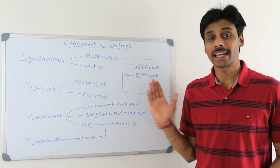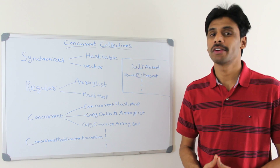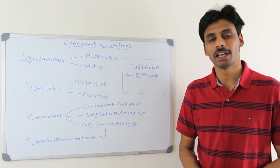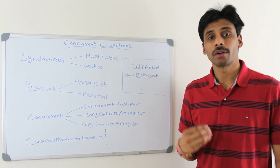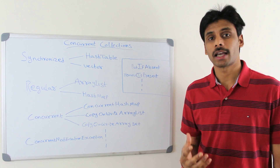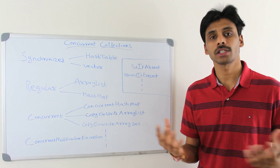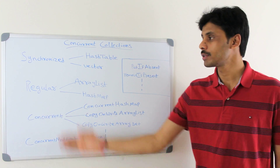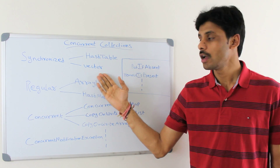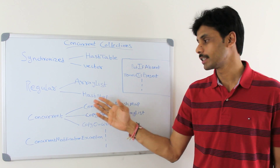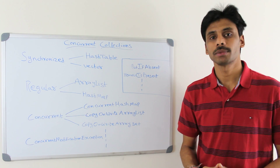This lecture introduces you to concurrent collections that started in Java 5, which allow us to develop scalable multi-threaded Java applications. Prior to Java 5, if you had to use collections to hold on to several objects across multiple threads, you either used the synchronized collections like HashTable and Vector, or the regular collections like ArrayList, HashMap, HashSet, etc.